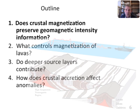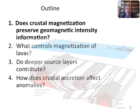With those basics behind us, here's an outline of what I'd like to cover: first, does crustal magnetization really preserve a record of field intensity as we think it should, and how we might test that; then we'll look at source layers responsible for magnetic anomalies starting with lavas and moving to deeper layers; and finally, how crustal accretion affects the shape of anomalies.